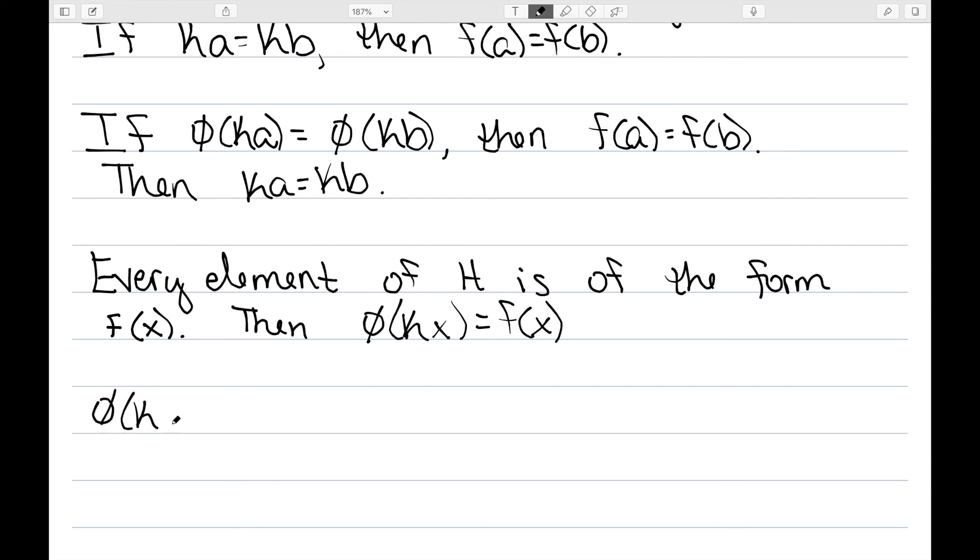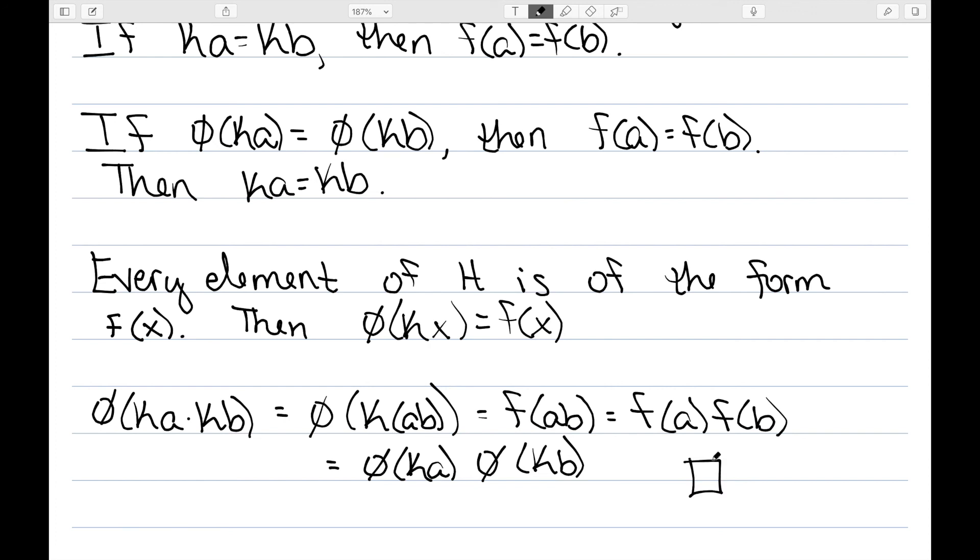Finally, let's look at phi(KA times KB). Well, that's the same thing as phi(KAB) by definition of coset multiplication. Definition of phi tells me that this is F(AB). F was a homomorphism, so we know that F(A)F(B). And then, well, F(A) is by definition phi(KA). F(B) is phi(KB). And therefore, we have shown that this is an isomorphism.